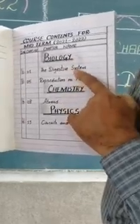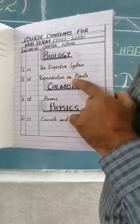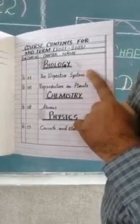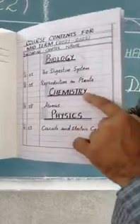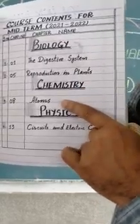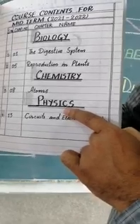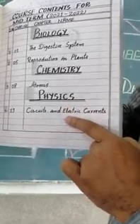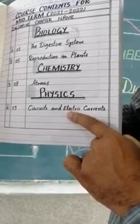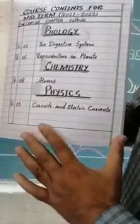After that, you will draw a block and write a title. After that, you will write biology. In biology, we will study two chapters: the digestive system and reproduction in plants. These two chapters are included in the biology portion. After this, you will write chemistry. In chemistry, we will study atoms. After this, you will write physics. In physics, we will study only one chapter — chapter number 13, Circuits and Electric Currents. This is the course of content for the midterm session.